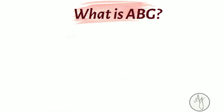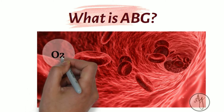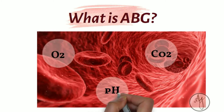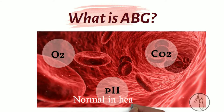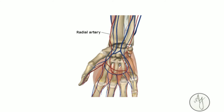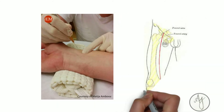So what is an arterial blood gas? It's a test that measures oxygen and carbon dioxide levels in your blood. It also measures your body's acid-base level, or in simple words, the pH. This pH is usually in a normal range in a healthy body. To take an ABG, we require a small volume of blood drawn from the radial artery, but sometimes the femoral artery in the groin or any other site is used.